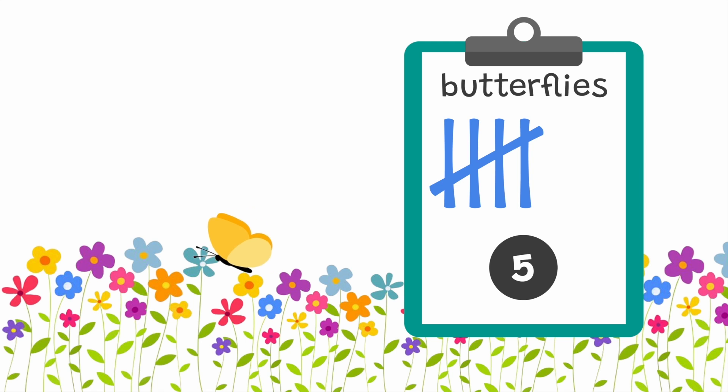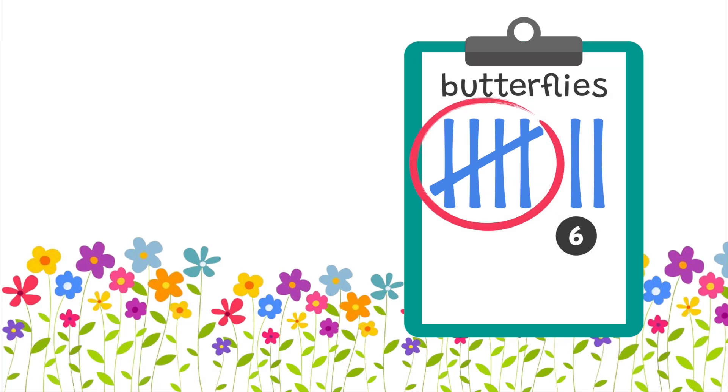Another butterfly. That's six. The sixth tally mark starts the next group. And one more butterfly. That's seven. And now we have seven tally marks. Since the first five tally marks are bundled together, it's easier to count the total. We can count like this. Five, six, seven.